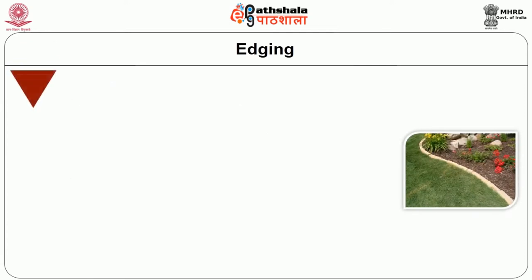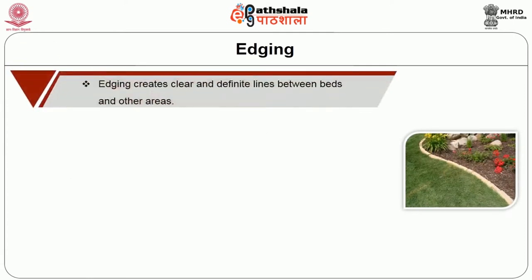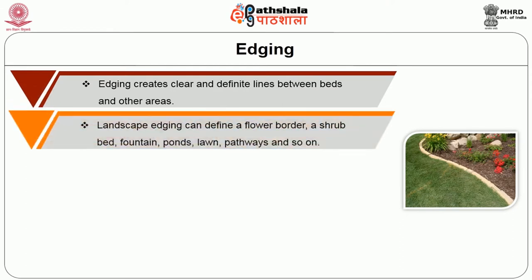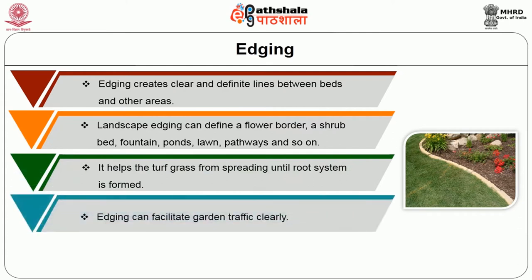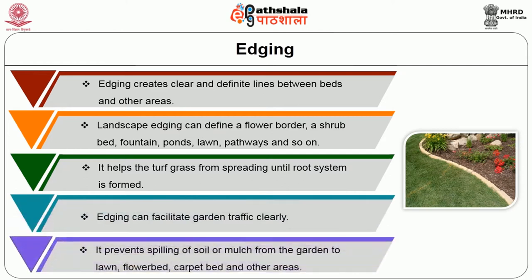Uses of landscape edging: edging creates clear and definite lines between beds and other areas. Landscape edging can define a flower border, shrub bed, fountain, ponds, lawn, pathways and so on. It helps prevent turf grass from spreading until the root system is formed. Edging can facilitate garden traffic clearly. It prevents spilling of soil or mulch from the garden to lawn, flower bed, carpet bed and other areas.